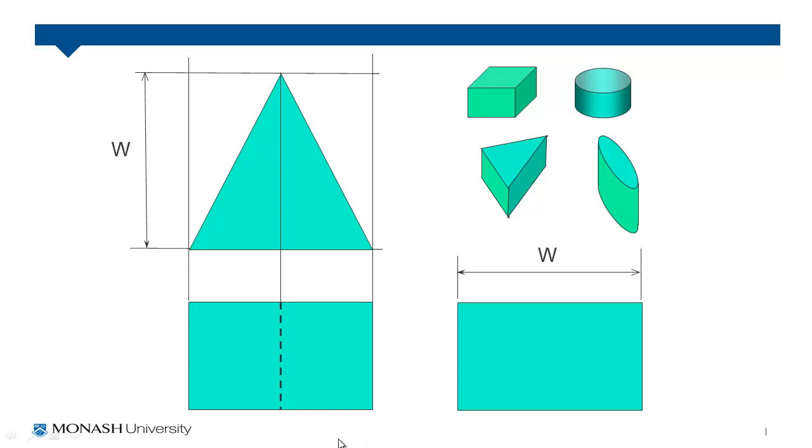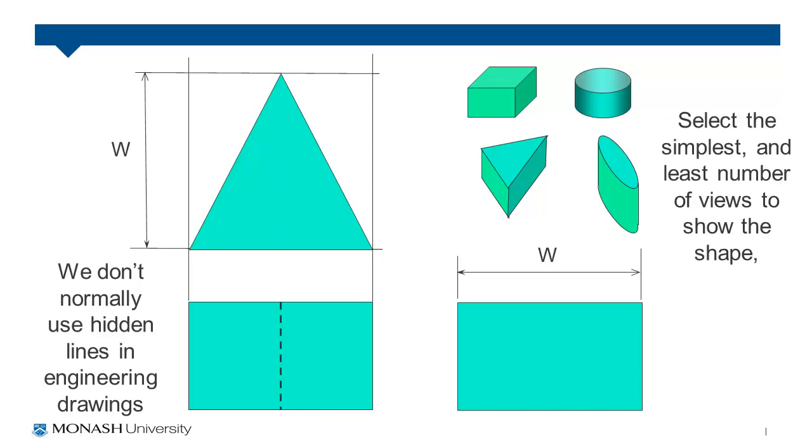Although we try not to use hidden lines in engineering drawings, in this case we might, or better yet if you rotated this triangle around so the point was here this hidden line would then become a solid line. We generally want to try and represent an object in its simplest forms. That usually means with the least number of views required to show its shape.